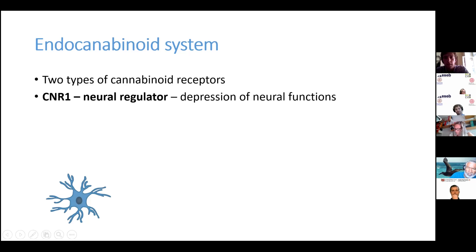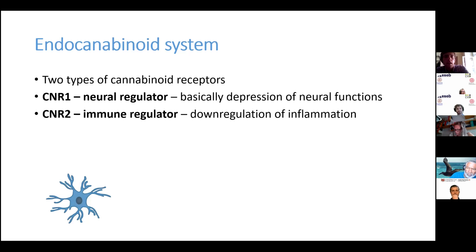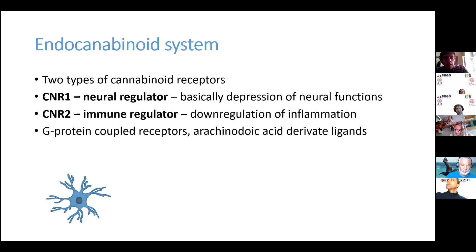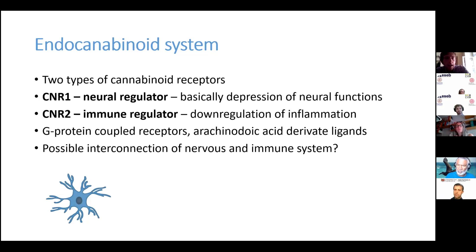CNR1's function is basically to depress neural functions. The other one is the CNR2 receptor, which occurs on immune cells, and its function is the down-regulation of inflammation and the regulation of expression of pro-inflammatory cytokines. They are both G-protein-coupled receptors, and the ligands are arachidonates called endocannabinoids. We chose them for their possible interconnection of the nervous and immune systems.